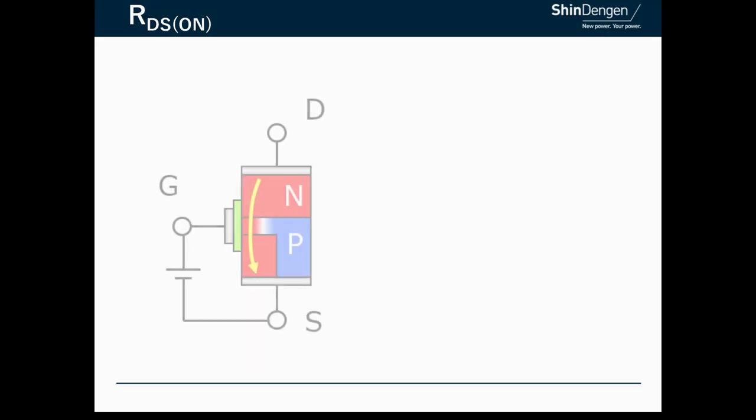This figure shows the structure of a MOSFET. When a voltage is applied between the gate and source, the P layer just below the gate is inverted to an n-type semiconductor and becomes a conducted state. This part is called a channel.